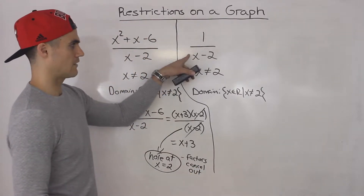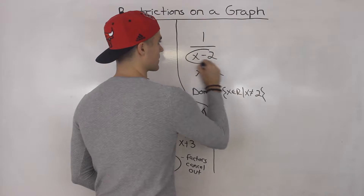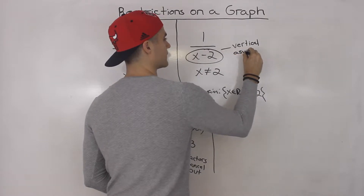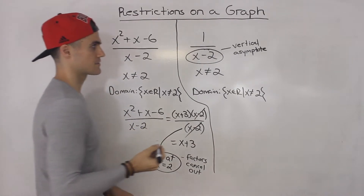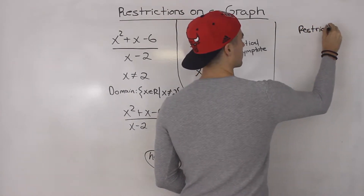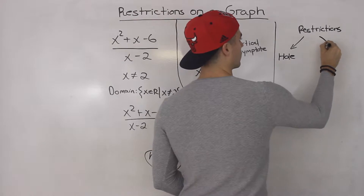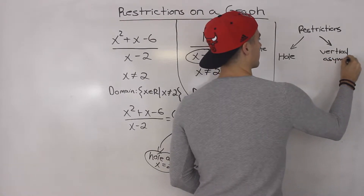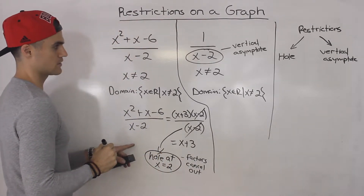Notice here how there were no factors that cancel out — x minus 2 is just there. So what this means is that there is a vertical asymptote. Restrictions in general, if we make a little summary, are either going to be one of two things: they're going to be either a hole or a vertical asymptote. And we can actually show this on a graph.